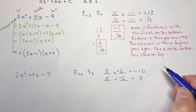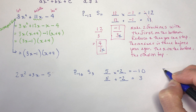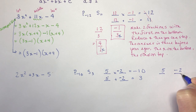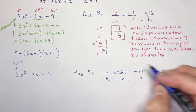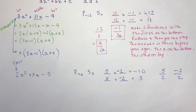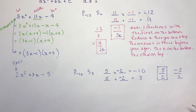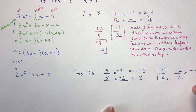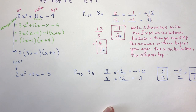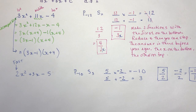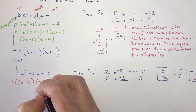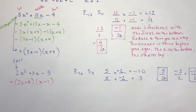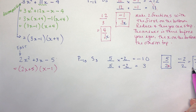What multiplies to minus 10 and adds to positive 3? Hopefully you stopped the video and figured that out. 5 and 2 would make 10, but I want positive 3, so that means the 2 has to be negative. So I have my two special numbers and I'm going to make two fractions. I write 5 and minus 2, make two fractions with the first on the bottom — the first is 2. Reduce: I can't reduce 5 over 2, but minus 2 over 2 reduces to minus 1 over 1. The answer is there before your eyes — the x on the bottom, the other on top — giving me 2x plus 5 and x minus 1. No decomposition needed. No more than two lines.